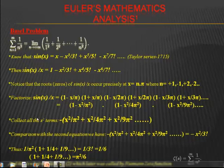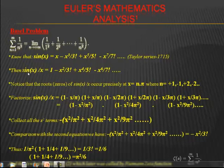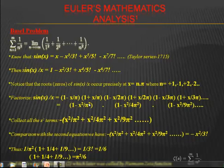Doing the multiplication of these factors, we can collect the x squared term, which equals minus x squared over pi squared, plus x squared over 4 pi squared, plus x squared over 9 pi squared, and so on. Going back to the first equation, sin(x) over x equals 1 minus x squared over 3 factorial and so on. We compare the x squared terms from both expressions to get x squared over pi squared plus x squared over 4 pi squared plus x squared over 9 pi squared equal to x squared over 3 factorial.